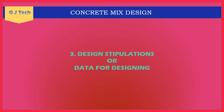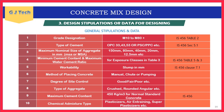Design stipulations and data required for mix designing. General information is tabulated in four columns. First: grade designation — we need to know which grade of concrete we are designing; different grades are given in IS 456 Table 2, from M10 up to M80 and even M100. Second: type of cement must be clearly specified.